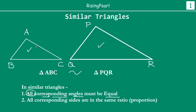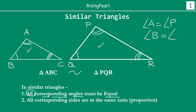So that means if you take angle B, this should be equal to angle Q. If you take angle A, this should be equal to angle P, and if you take angle C, this angle must be equal to angle R. So in other words, angle A must be equal to angle P, angle B must be equal to angle Q, and angle C must be equal to angle R. This is the first point - all corresponding angles must be equal.